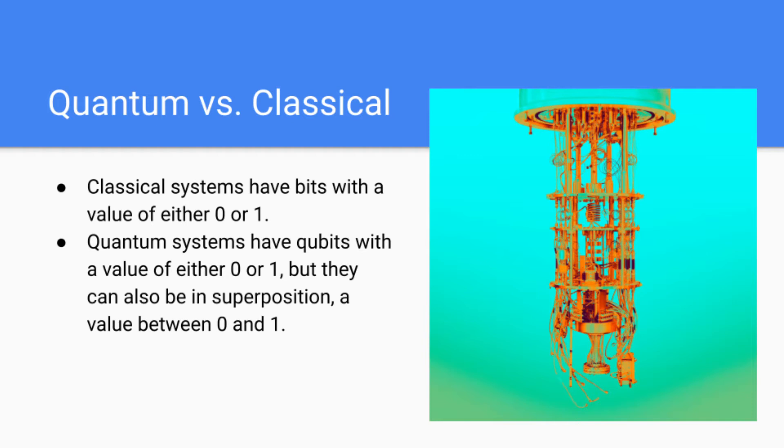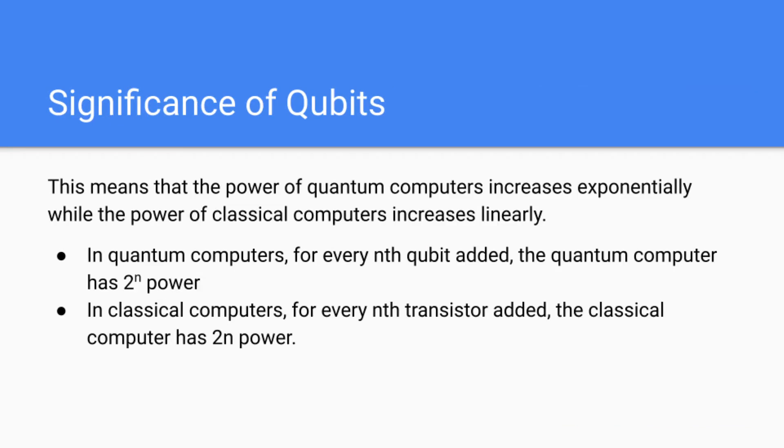Quantum systems, on the other hand, have qubits, which is an abbreviation for quantum bits. And these can either have a value of 0 or 1, but they also have a third state they can be in, which is called superposition. And this is sort of like a value between 0 and 1, and it helps quantum computers take advantage over classical computers.